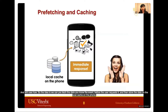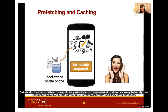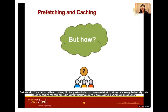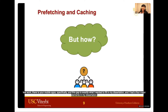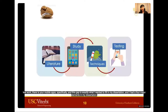The idea is we can prefetch data in advance before the user requests it, then store it on a local cache on the phone. When the user actually requests the data, we return the response immediately from the local cache without any network — that's why it's super fast with no latency. Prefetching and caching has been applied successfully in many domains, but you'd be surprised how little work there is in mobile apps specifically, and this gap is exactly what I wanted to fill in my dissertation.